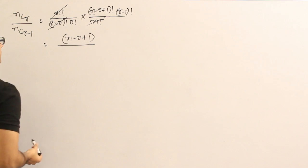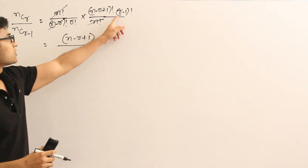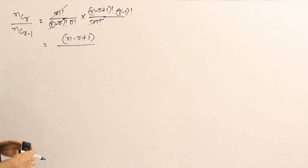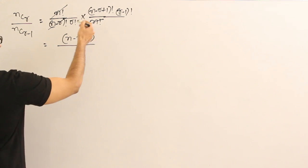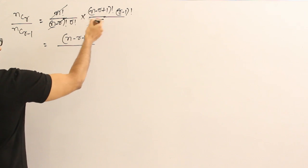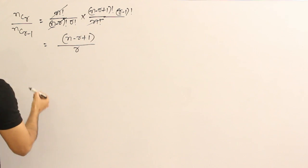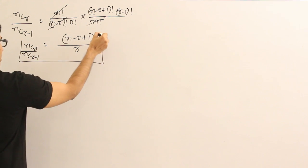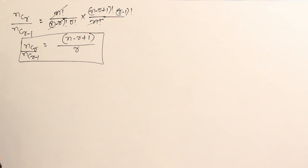And now, if you observe this one, R minus 1. This is R minus 1 factorial and it is R factorial. Then, how can you write this? R minus 1 factorial and R factorial is, if you cancel it out, we are going to get R. So, remember this one. NCR divided by NCR minus 1 is equal to N minus R plus 1 divided by R.